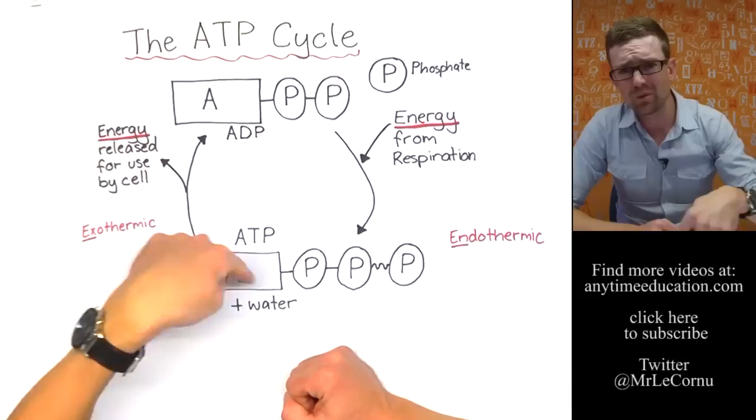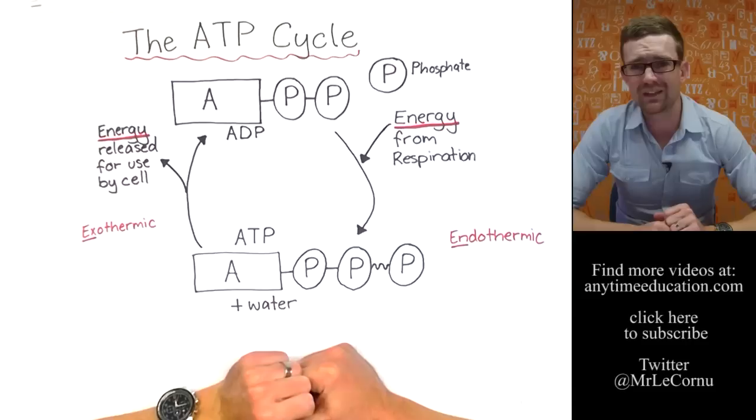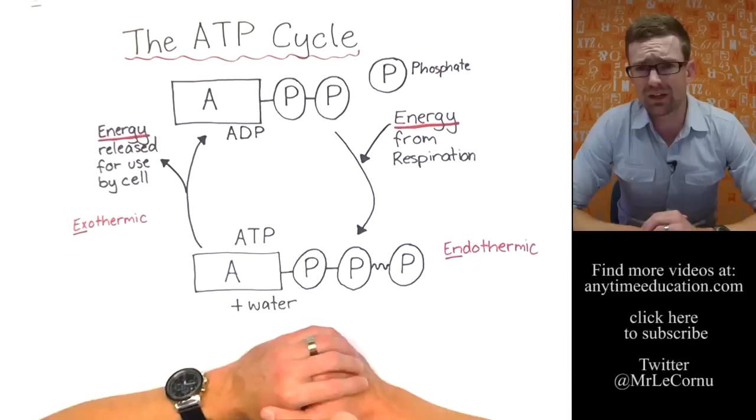In fact, in one day, the equivalent of a human body weight of ATP is recycled in your body. Just think about that. So let's say you're 65 kilograms. In one day, your body uses up 65 kilograms of ATP.